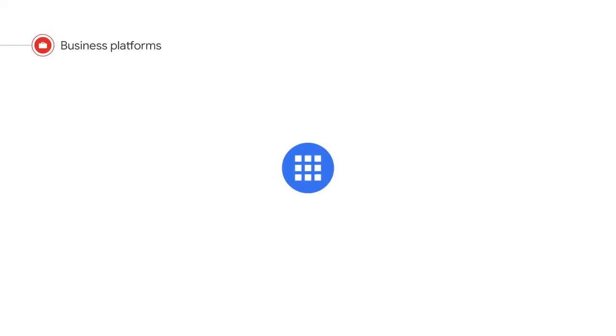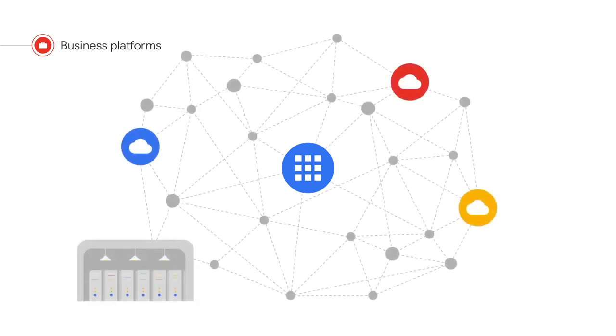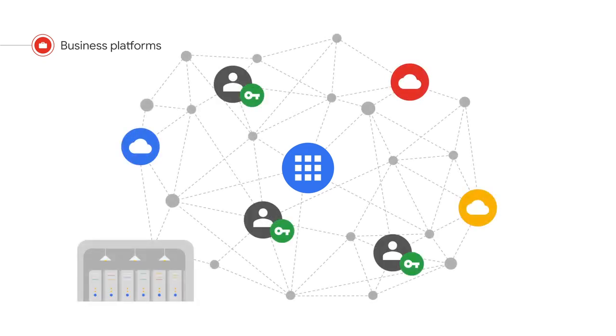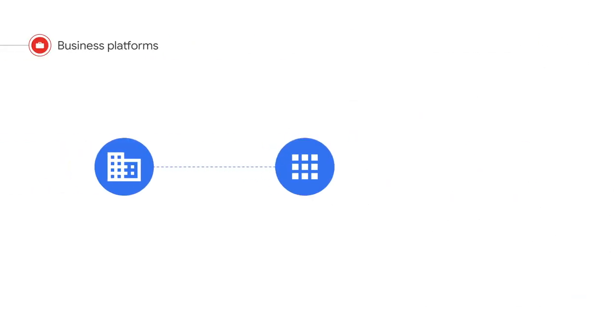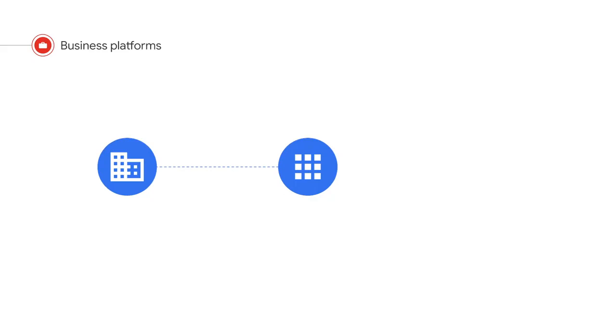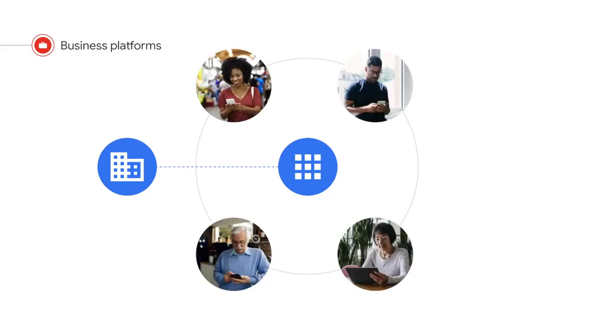In the last video we covered the first focus area for modernization. Let's now look at the next two. Business application platforms are essentially about enabling integration between systems and granting users the correct access privileges in an organization and beyond. For example, suppose a company uses a third-party platform for managing parts of customer data.